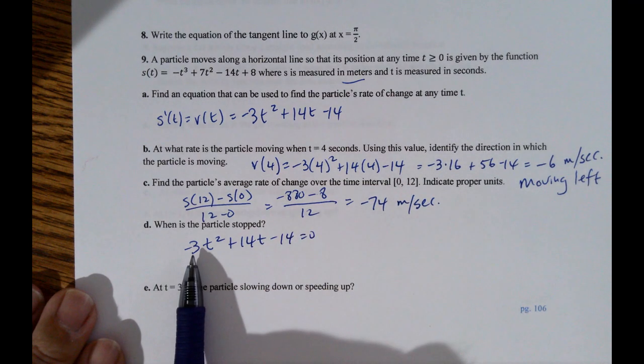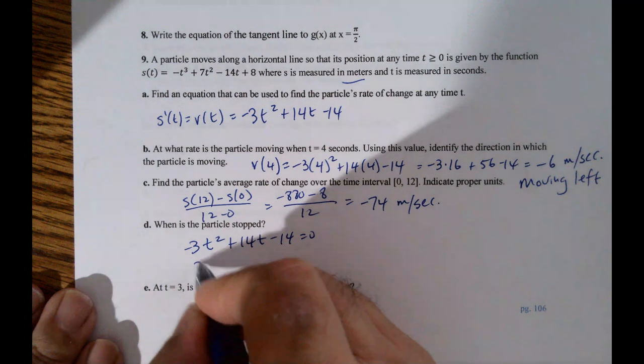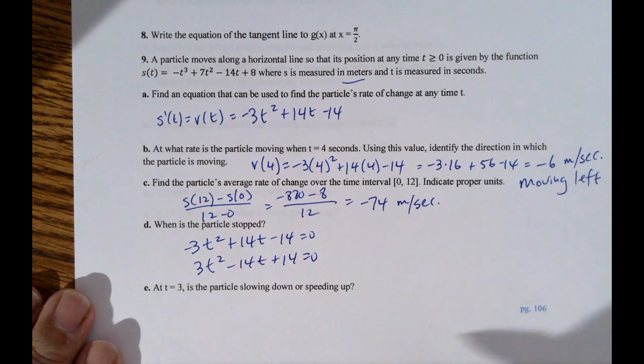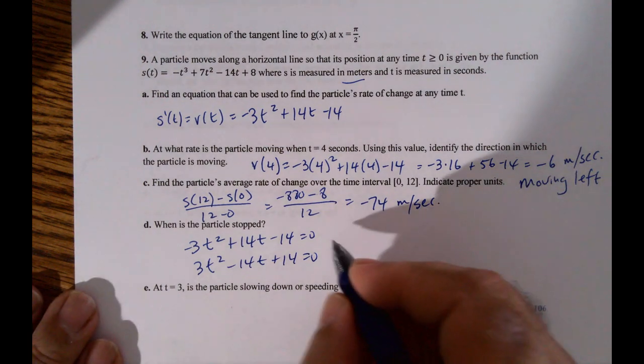I don't like it when the leading coefficient is negative, so I change the sign. And then it turns out that can't be factored anyway. So we have the quadratic formula.